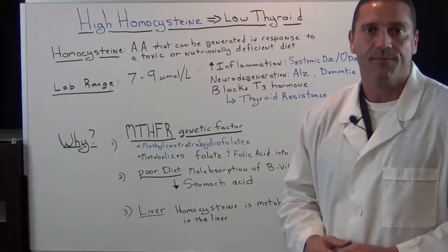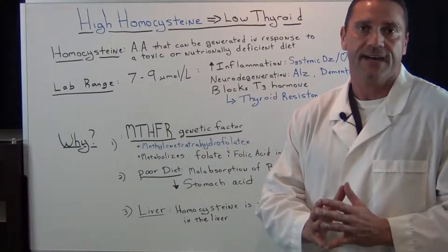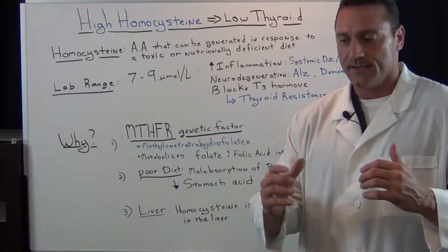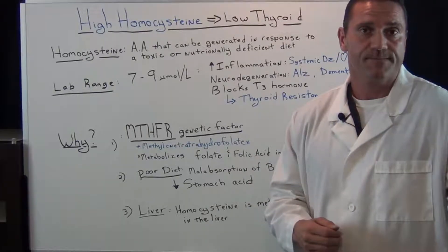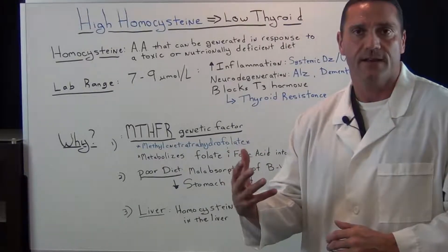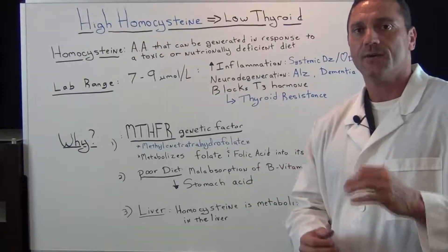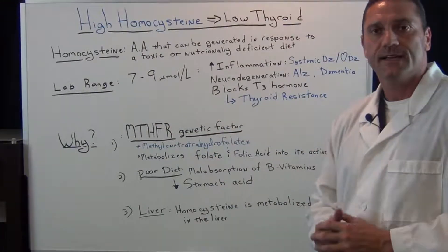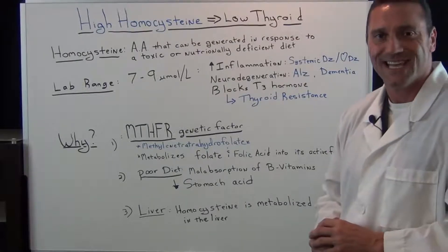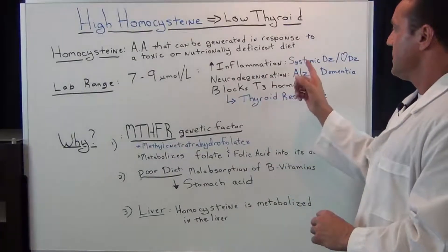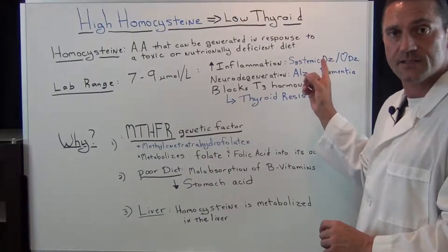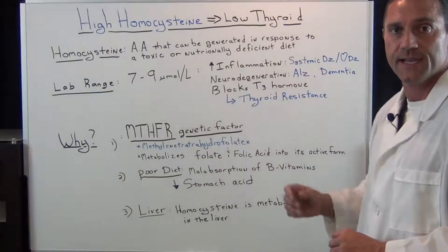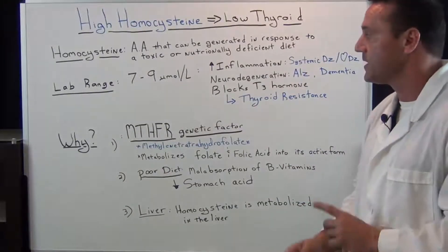When it comes to lab ranges, I explain to my patients that the lab ranges for homocysteine are like cholesterol — too little is bad and too high is bad. I always look for a level between seven to nine, because if it's higher, it causes systemic inflammation and systemic diseases which can lead to heart disease, heart attacks, and strokes.